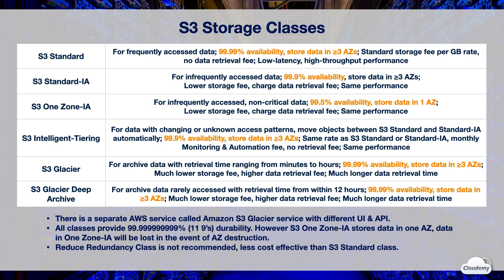S3 Intelligent Tiering is designed to optimize cost for data with unknown access patterns. It automatically moves objects between S3 Standard and S3 Standard IA based on usage patterns. It's designed for 99.9% availability across at least three AZs. S3 monitors access patterns and moves objects not accessed for 30 days to the infrequent access tier. If an object in the infrequent access tier is accessed, it's automatically moved back to the frequent access tier without any performance impact. You pay the same rate as S3 Standard or S3 Standard IA, plus a small monthly monitoring fee, with no retrieval fee.